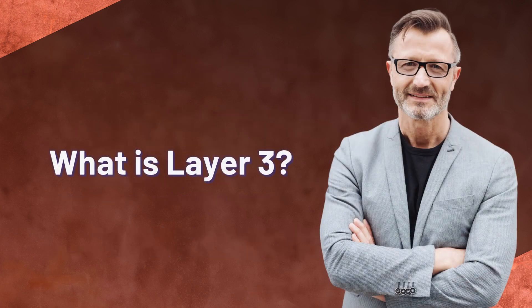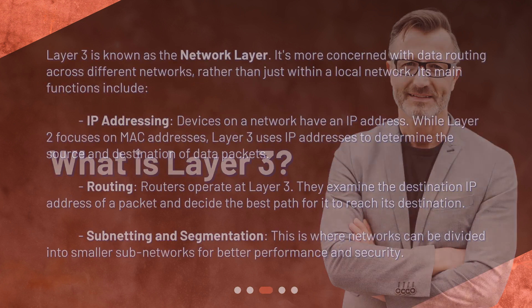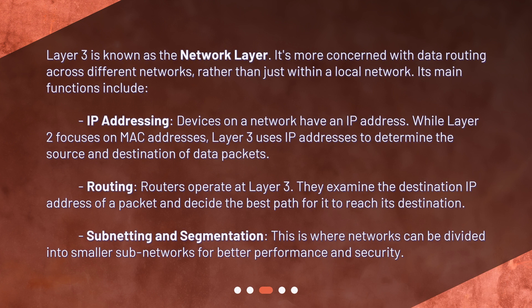What is layer 3? Layer 3 is known as the network layer. It's more concerned with data routing across different networks, rather than just within a local network. Its main functions include IP addressing — devices on a network have an IP address, and while layer 2 focuses on MAC addresses, layer 3 uses IP addresses to determine the source and destination of data packets.